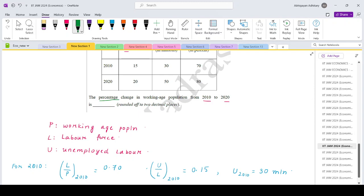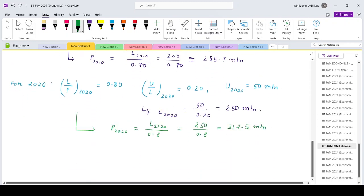So the question is we want to find out the percentage change in the working age population. So what is the percentage change in P? It is P in 2020 minus P in 2010, divide by P in 2010, into 100. Change in P from 2010 to 2020 divide by the initial amount of P into 100.